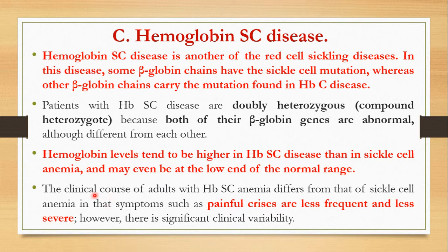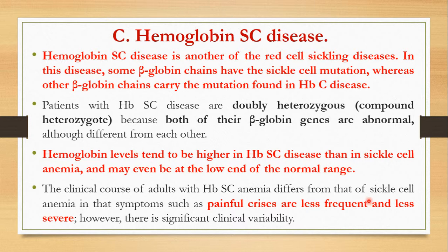The clinical course of adults with HbSC disease differs from that of sickle cell anemia in that symptoms such as painful crises are less frequent and less severe. For example, in sickle cell anemia a painful crisis might occur daily, whereas in HbSC disease it might occur once a week. Similarly, the pain intensity in sickle cell anemia is strong, while in HbSC disease it is less intense.